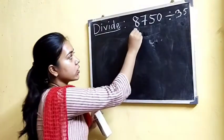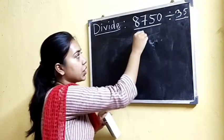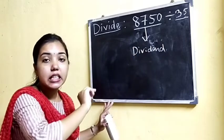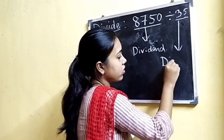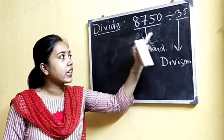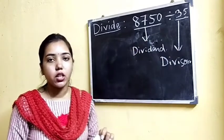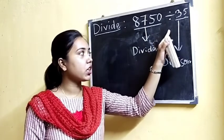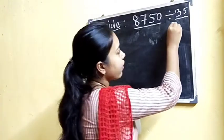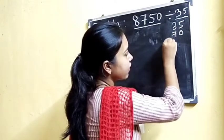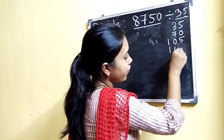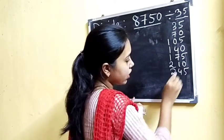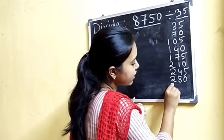Now let us divide. We have a four-digit number which is to be divided by a two-digit number. The number which is to be divided is called the dividend, and the number by which the dividend is divided is called the divisor. To divide this, we have to know the tables of thirty-five. Since it is not possible to learn all tables, we will write the table of thirty-five by multiplication. Thirty-five ones are thirty-five, thirty-five twos are seventy, thirty-five threes are one hundred five, thirty-five fours are one hundred forty, thirty-five fives are one hundred seventy-five, thirty-five sixes are two hundred ten, thirty-five sevens are two hundred forty-five, thirty-five eights are two hundred eighty, thirty-five nines are three hundred fifteen.